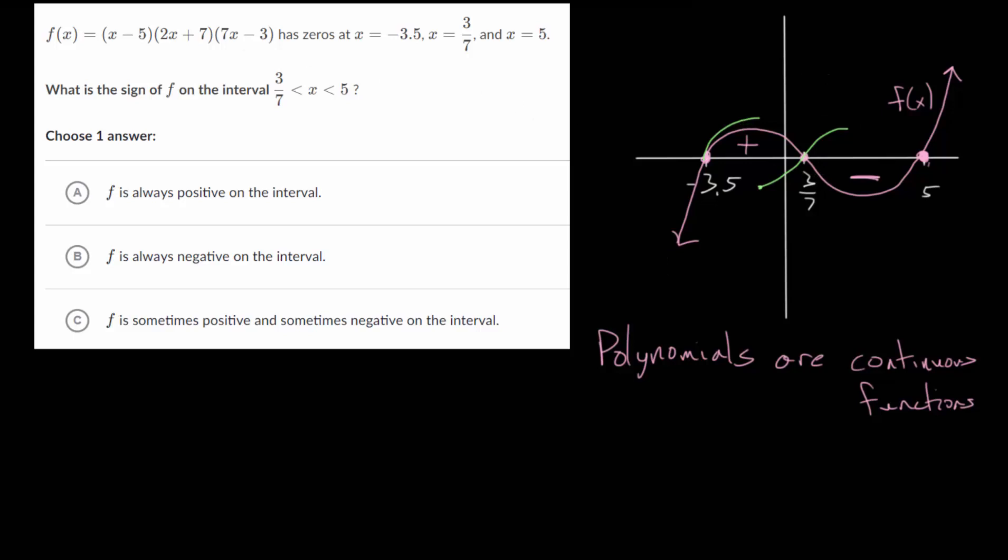So the main conclusion that you want to take from this is that between two consecutive zeros the polynomial function is either always above the x-axis, it's always positive, or between two consecutive zeros it's always below the x-axis or it's always a negative y-value. And with that information we can figure out what the sign is on a certain interval.